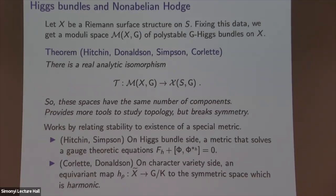The correspondence works by relating stability conditions on Higgs bundles to existence of special Hermitian metrics. On the Higgs bundle side, you have some holomorphic bundle with extra structure and you're looking for a Hermitian metric which solves some gauge-theoretic equations. On the representation side, starting with a representation and picking a Riemann surface, you interpret a metric as an equivariant map to the symmetric space of the group, and you look for such a map which is harmonic.